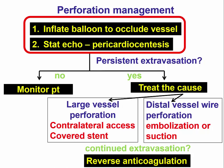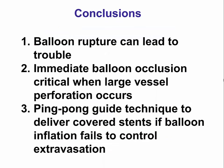Importantly, we did not reverse the anticoagulation. The reason is that we have wires and balloons within the coronary artery, and if anticoagulation is reversed early while this equipment is in place, massive clotting can occur, sometimes causing worse consequences than the perforation itself. The general rule is to delay reversing anticoagulation until after all equipment is removed from the coronary.